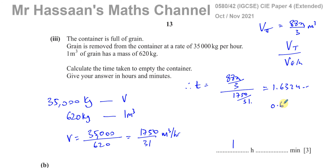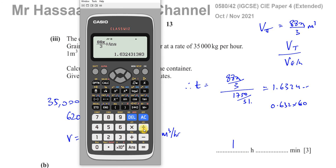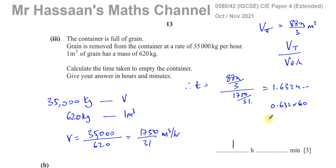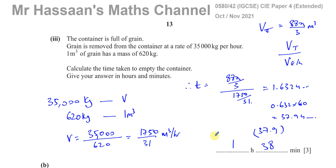To convert 1.6324 hours: the whole part is 1 hour. The decimal part, 0.6324, is multiplied by 60 to convert to minutes: 0.6324 × 60 ≈ 37.94 minutes, which rounds to 38 minutes. So the answer is 1 hour and 38 minutes — either 38 or 37.9 minutes should be acceptable.